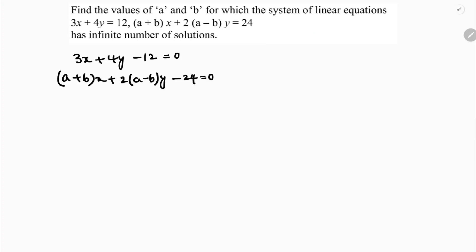So two lines, I will consider it as a1x plus b1y plus c1 equals 0 and a2x plus b2y plus c2 equals 0, has infinite number of solutions. So coincident lines. The condition is a1 by a2 equals b1 by b2 and that equals c1 by c2.